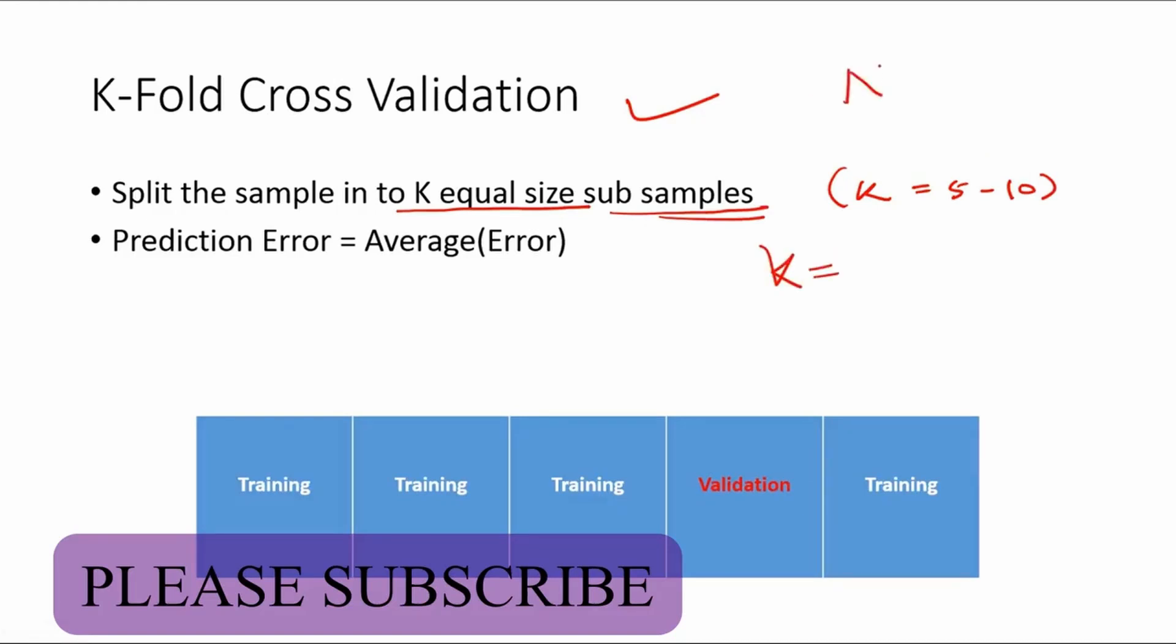In a sample let's say there are n observations and you have taken k subsamples, so the number of data points in each sample would be n by k, n upon k. Each subsample should have the equal number of observations, or say for instance k equal to 5.